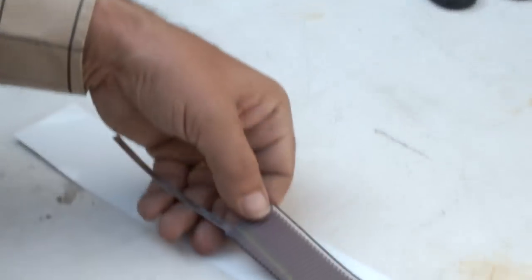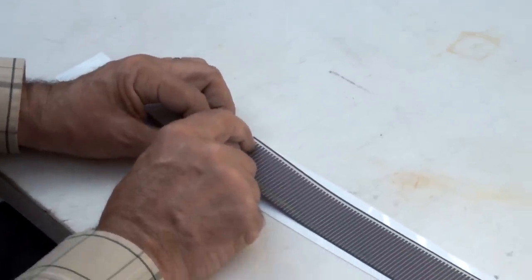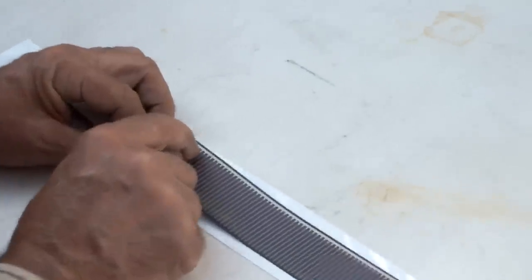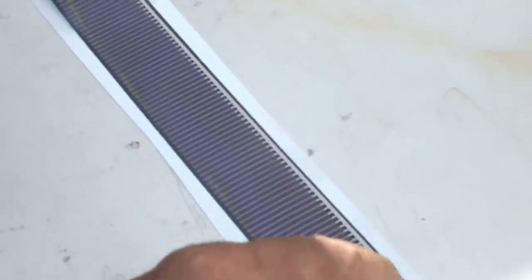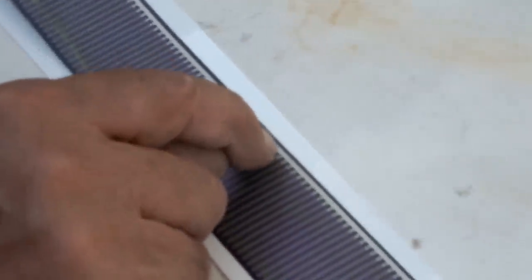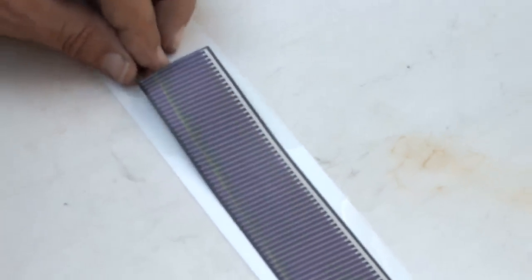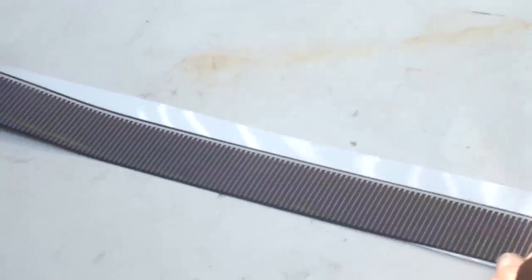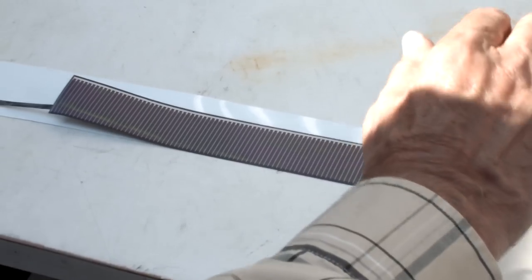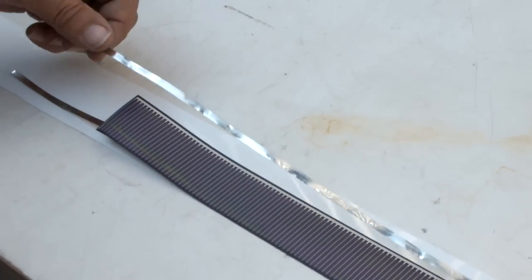Now we have to make a connection to the second part of the cell, which is this header along the top. This is a tiny strip of material that collects the energy from the solar panel, from the solar cell. So now we have to attach another wire, another tab, to this area here.